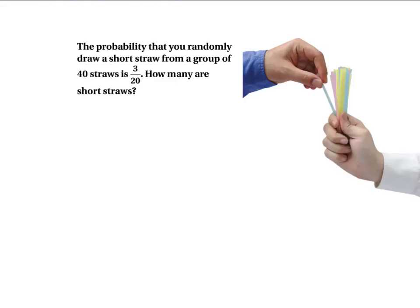Here's an example of using probability. It says the probability that you randomly draw a short straw from a group of 40 straws is 3 over 20. How many are short straws? Well, the probability is 3 out of 20. We know there are a total of 40 straws, so I want to know what it is over 40.